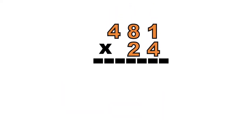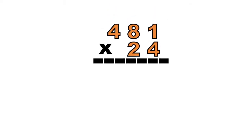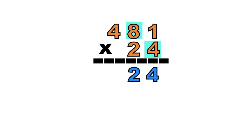How about if we have 481 and 24? Let's have our next example: 481 times 24. We're going to multiply digit 4 on each digit of the first factor. 4 times 1 equals 4. 4 times 8 equals — that's correct! It's 32. So we're going to write 2 at the bottom, carry 3. 4 times 4 equals 16.